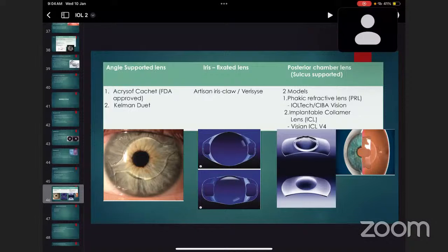Third is posterior chamber lenses that are sulcus-supported. Two models available: first is phakic refractive lenses from IOLTech of Ciba Vision, which is not used nowadays. Second is implantable collamer lens from Staar Vision ICL V4.